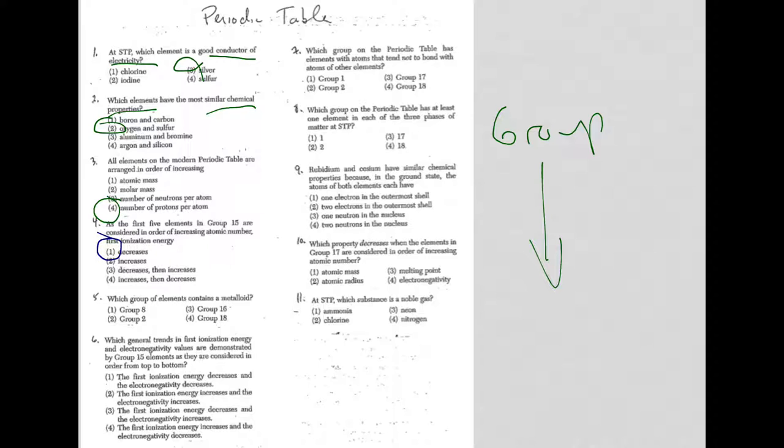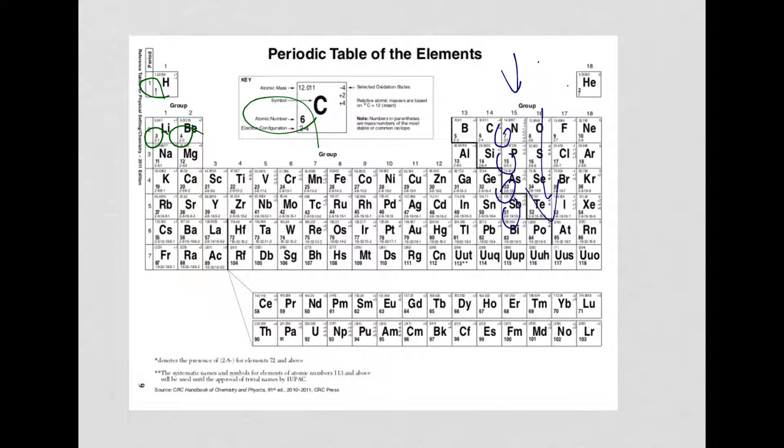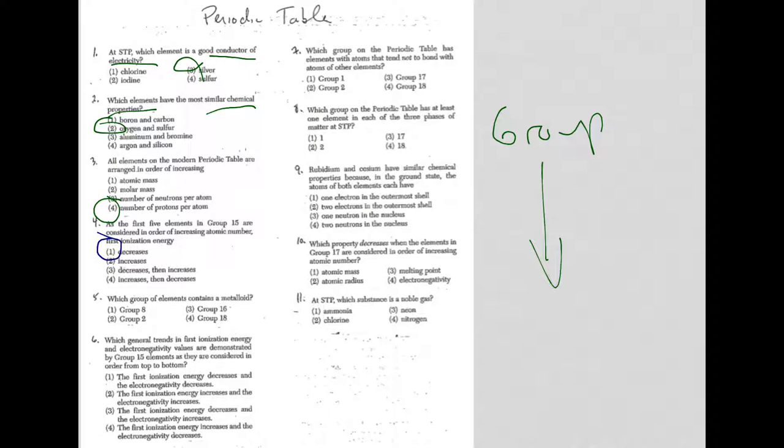All right, let's take a look at question five. Which group of elements contains a metalloid? Well, I just got rid of them, so let's put them back. Let me erase this. Our metalloids, again, sit on the staircase here, as I call it, and the two below. So we have metalloids represented in group 13, 14, 15, and 16. Let's go back. And sure enough, here's my answer. Group 16.